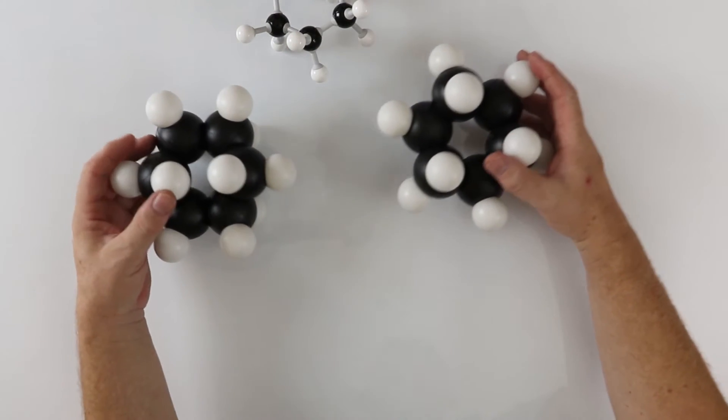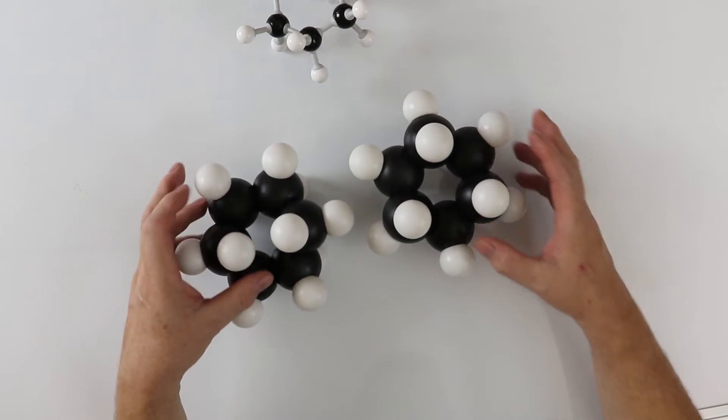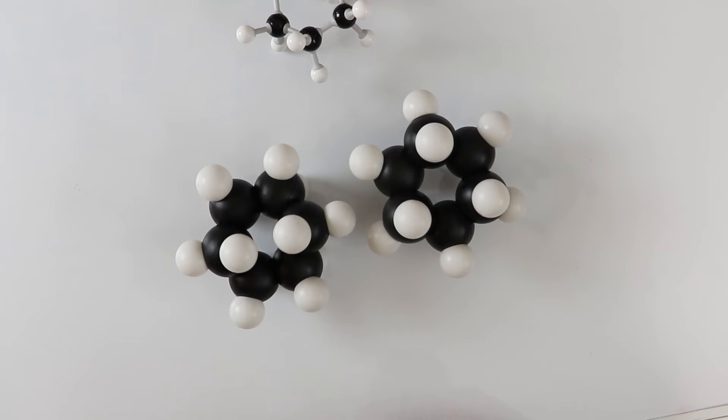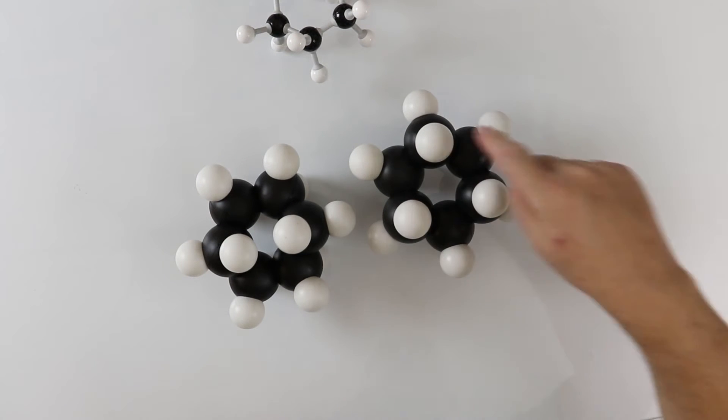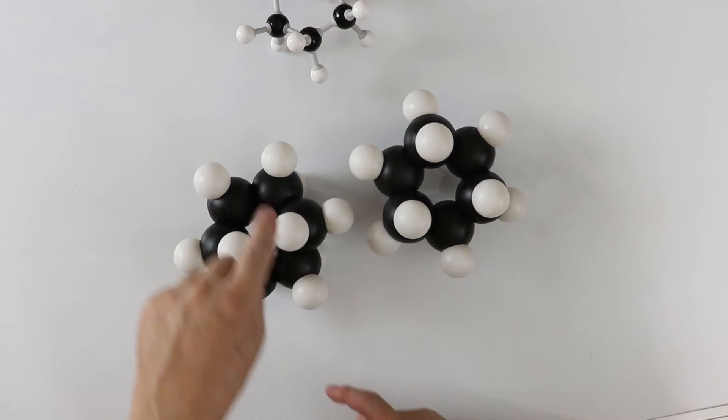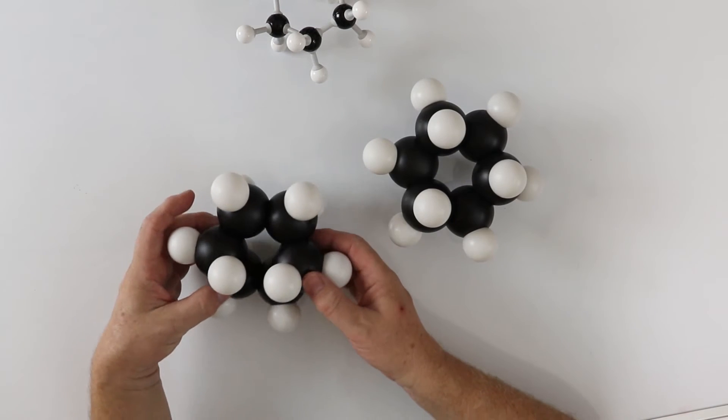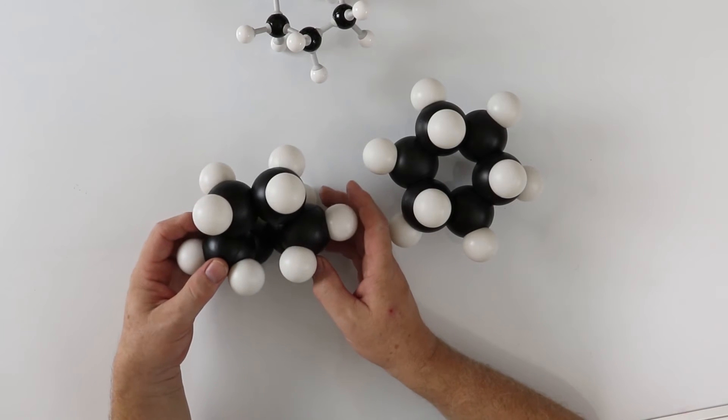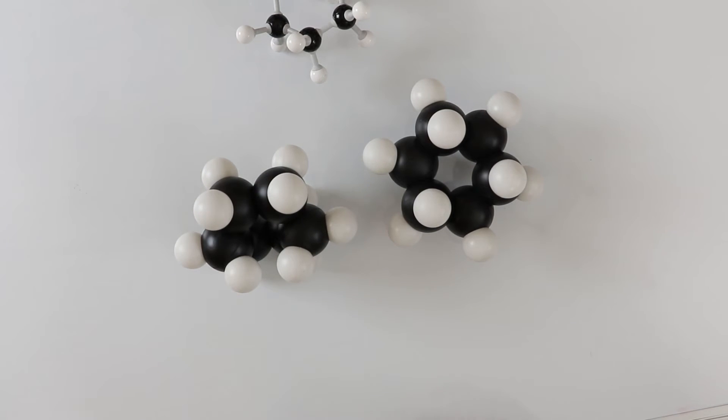The Satoms 3D space-filling models more easily show the three hydrogen atoms in the chair form and the four hydrogen atoms showing, depending on how you look at this, in the boat form.